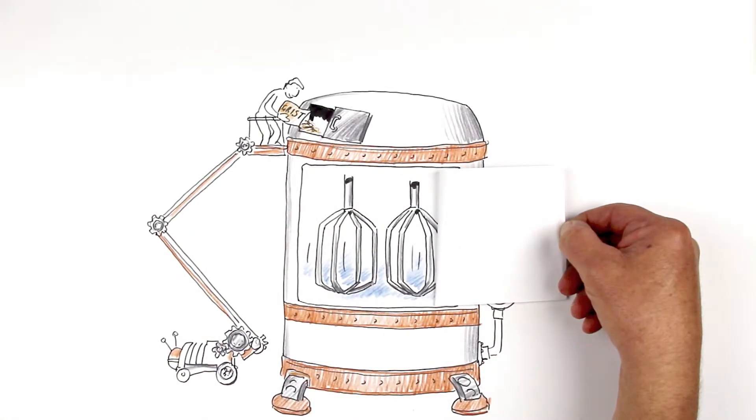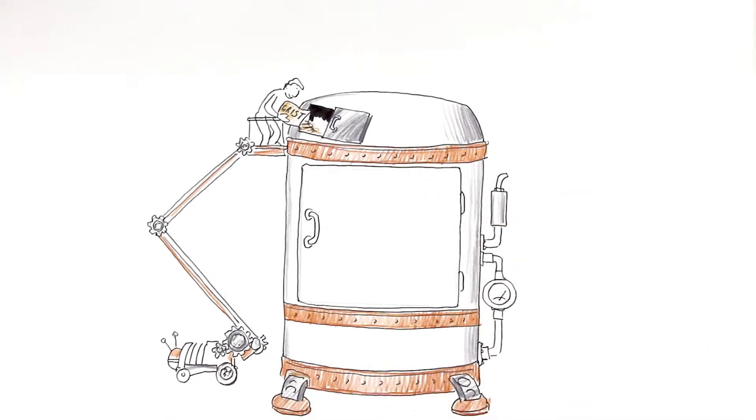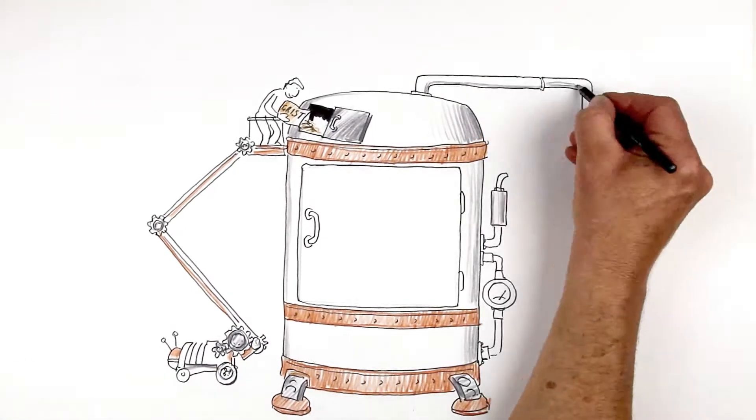We keep stirring the mash and after a while, the special enzymes in our malt mash begin to break down the starches, proteins and glucans, converting them into sugars that will later be fermented by the yeast.